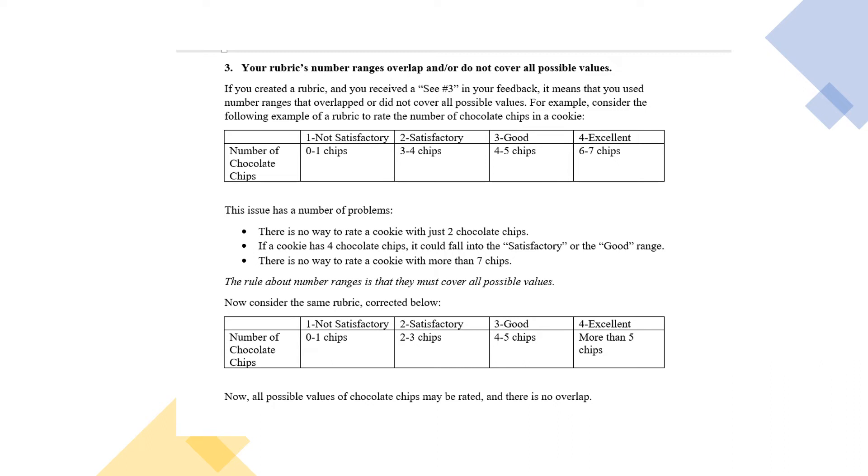For example, what if you had a cookie with two chips? Where would that go? You can't put it in one because that's only zero to one and you can't put it in two because that's three to four chips. Where would four chips go? That's an example of an overlapping range. It could go under two satisfactory because that's three to four chips or it could go under good because that's four to five chips.